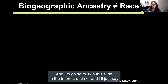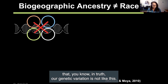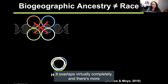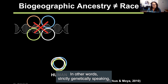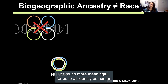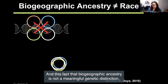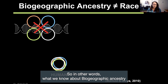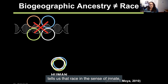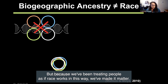To broadly emphasize: our genetic variation overlaps virtually completely, and there is more genetic variation within racial groups than between racial groups. Strictly genetically speaking, it's much more meaningful for us to all identify as human than as a specific biogeographic ancestry group. This fact that biogeographic ancestry is not a meaningful genetic distinction also tells us that race, as originally conceived—as innate, biologically derived, unchanging characteristics—does not exist. But because we've been treating people as if race works in this way, we've made it matter. This construct now matters for people's outcomes, including medical outcomes like cancer rates and maternal mortality rates due to racial disparities in industrial pollution exposure or chronic toxic stress from racial microaggressions.